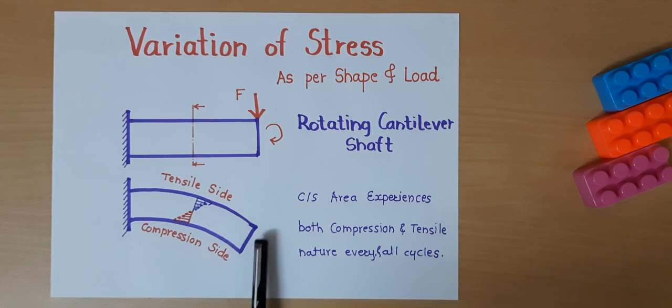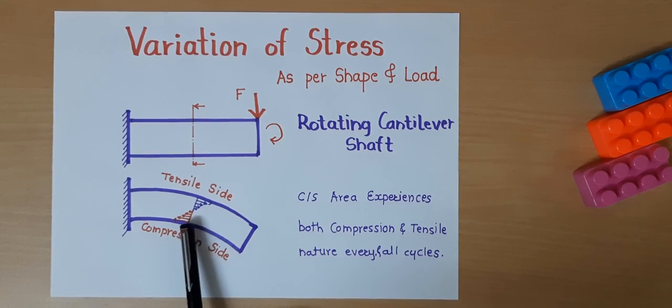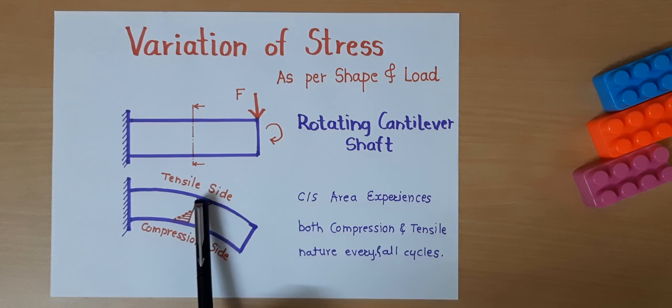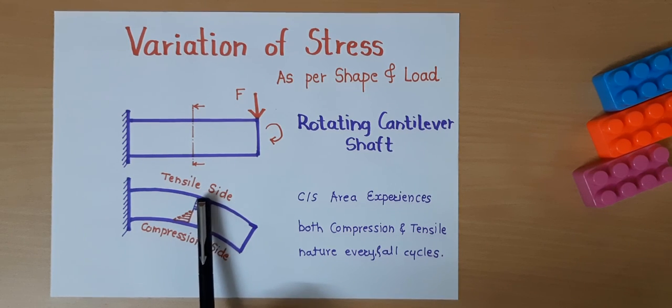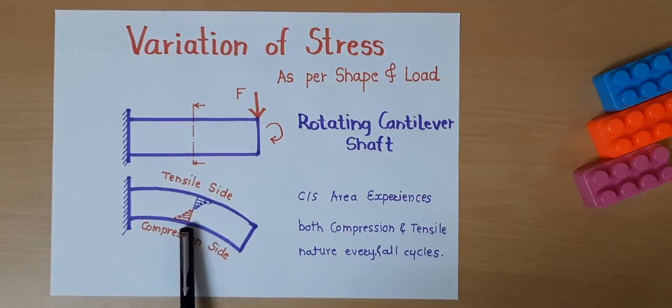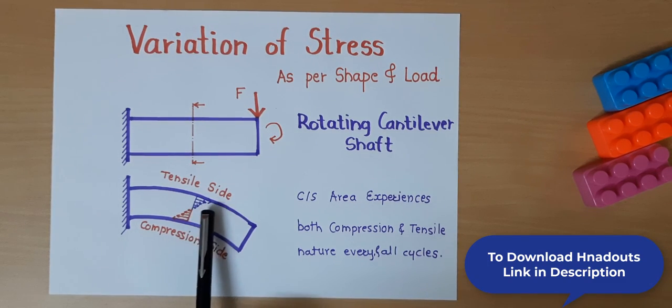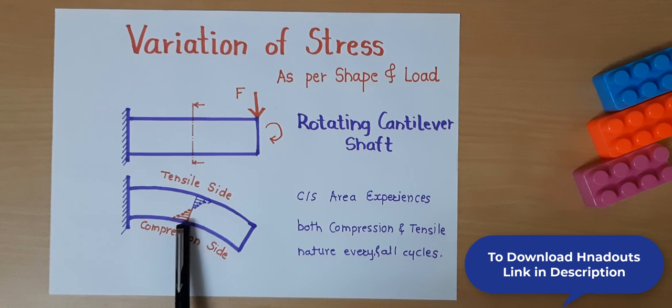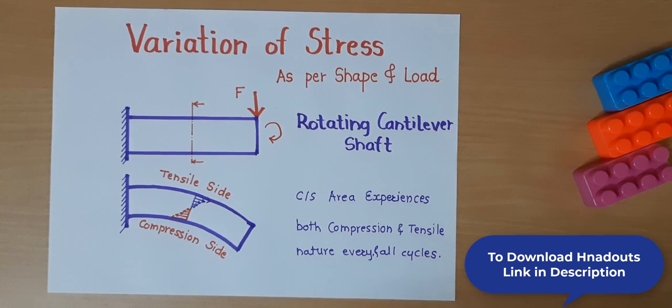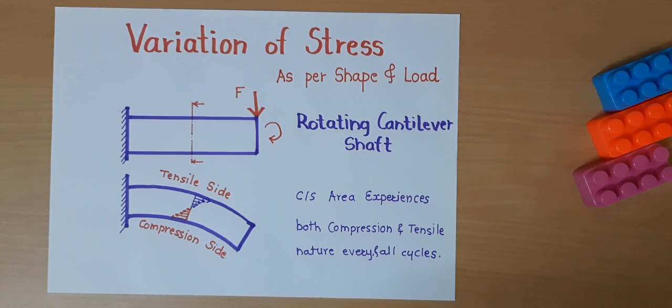When it rotates to the next cycle, this bottom portion will come into the tensile side and upper portion will come to the compression side. So stress at the same cross section will be having positive and negative. Same cross section area experiences both compression and tensile in one cycle alternatively.